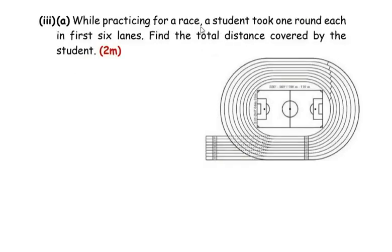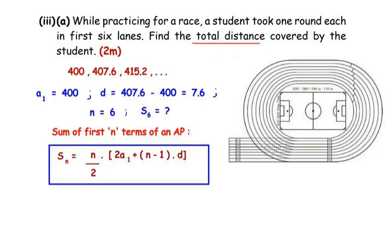Now the third question: while practicing for a race, a student took one round each in the first 6 lanes. Find the total distance covered by the student. The student covered 400m in lane 1, then 407.6m, and so on up to lane 6. Since the total distance is asked, we use the sum of n terms formula, with a1 = 400, d = 7.6, and n = 6.